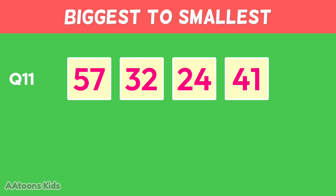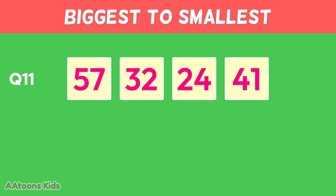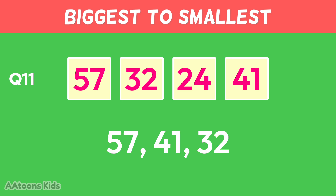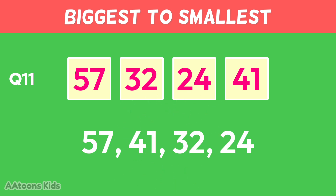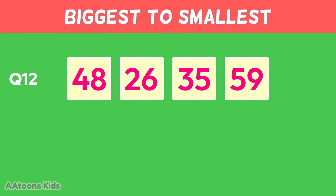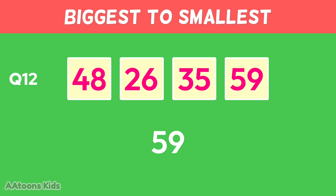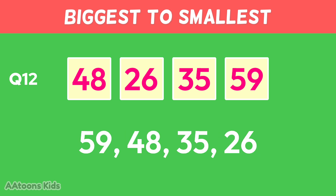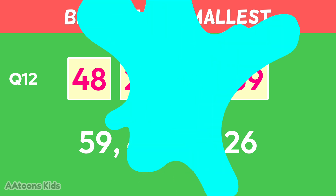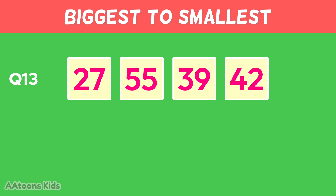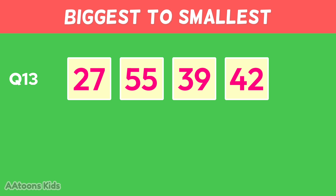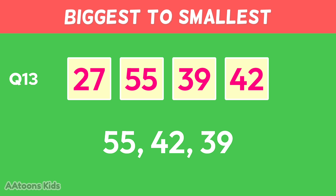Arrange these numbers from biggest to smallest: fifty-nine, forty-eight, twenty-nine. Arrange these numbers from biggest to smallest: fifty-five, forty-two, thirty-nine, twenty-seven.